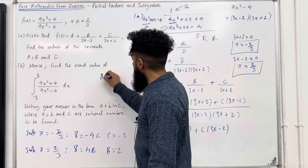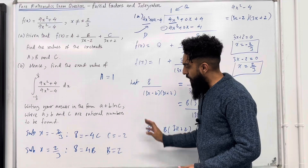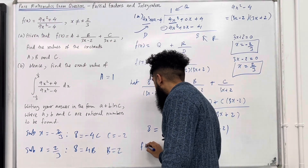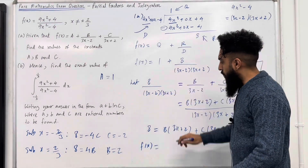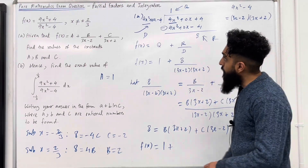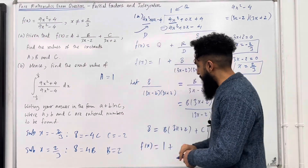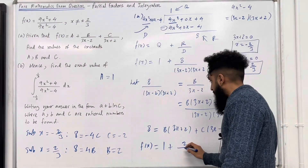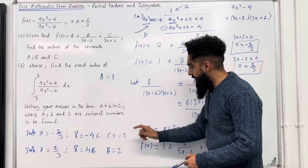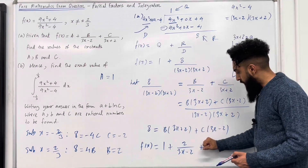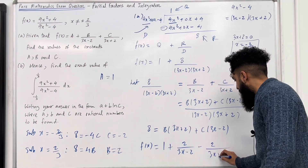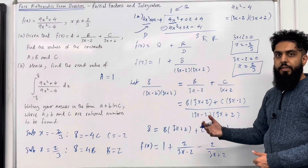So I've got a, which is 1 — that's my quotient. I've got b and c, so I can rewrite f of x as: f of x equals 1 plus 2 over (3x minus 2) minus 2 over (3x plus 2). That completes part A of the exam question.